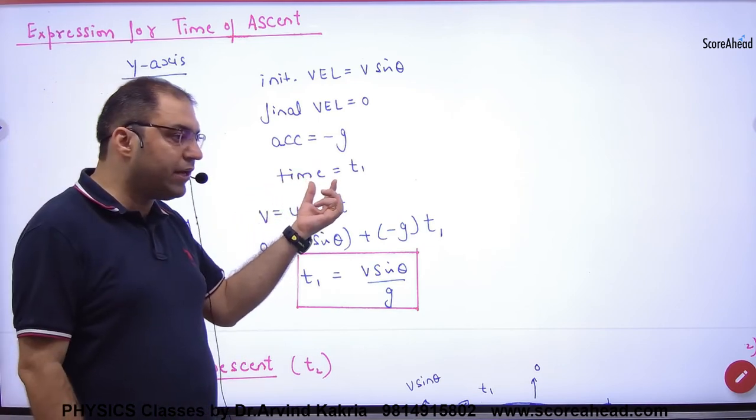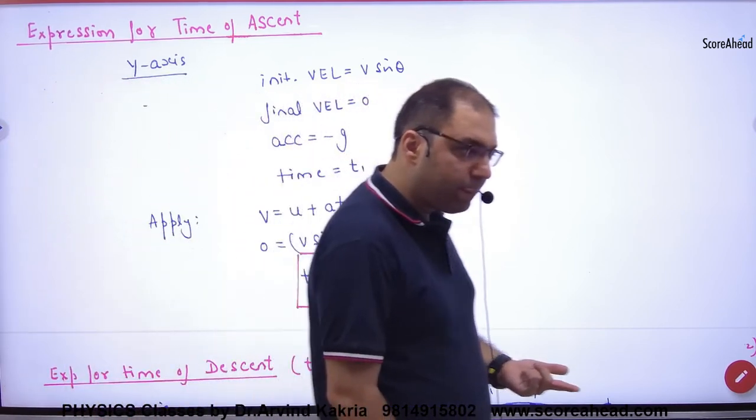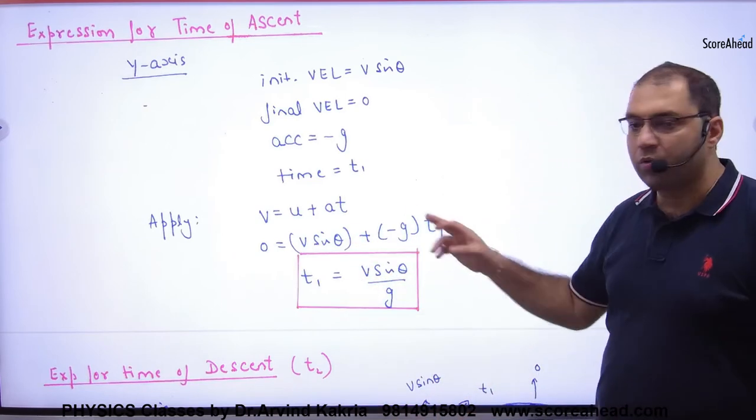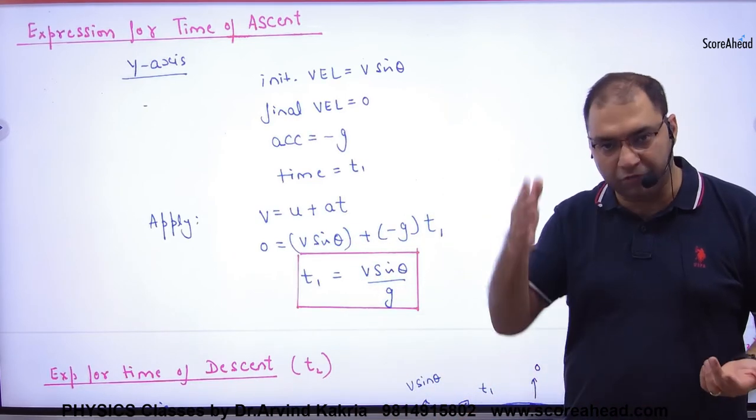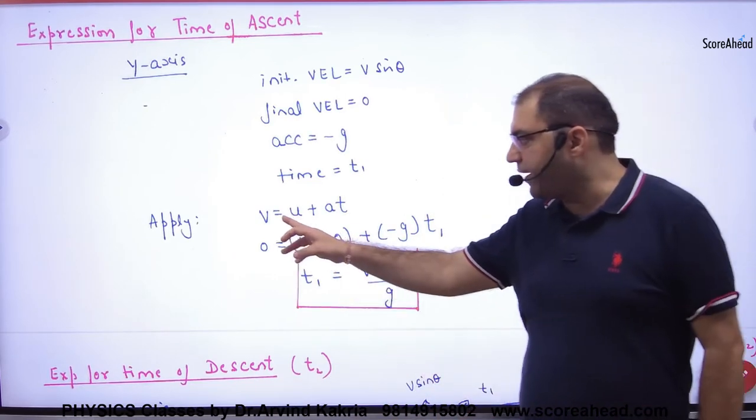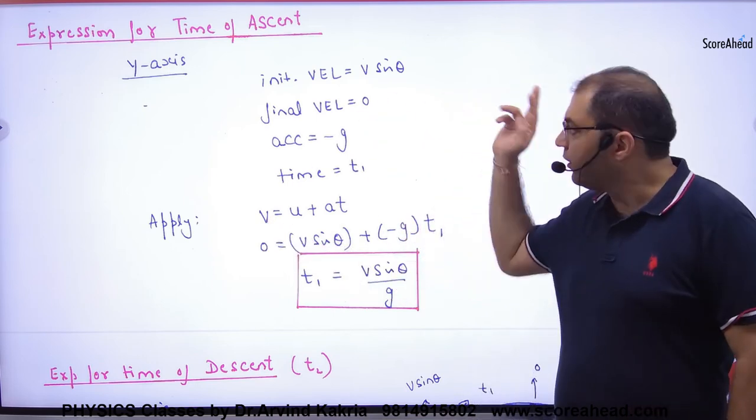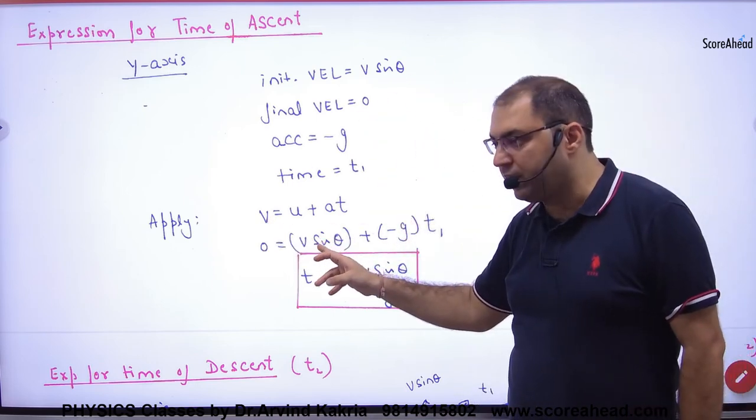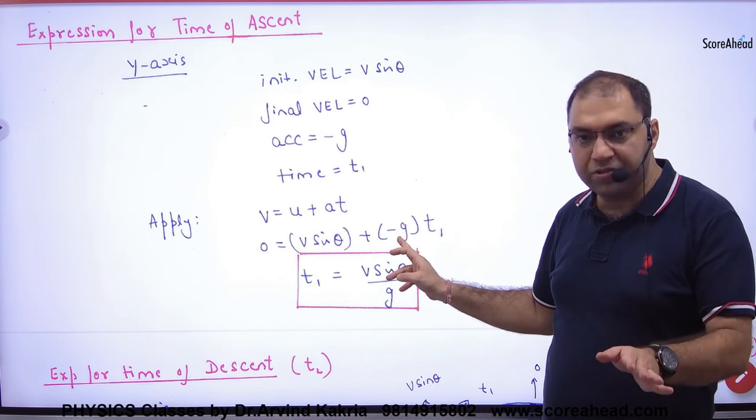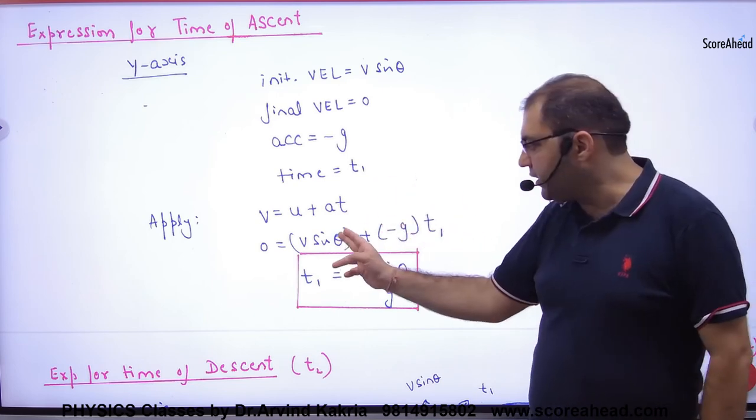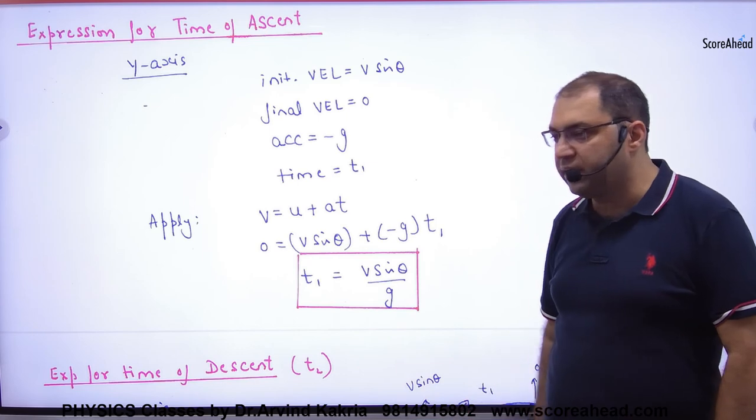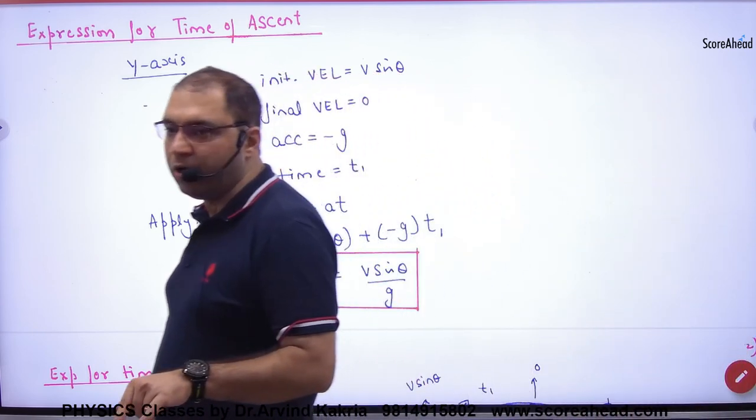So how much time will it take for the body to go up? t1. So you apply v is equal to u plus at. In the y-axis when we apply, final velocity is 0, initial velocity is vsinθ, acceleration is minus g, time is t1. So here we solve, so time of ascent will be vsinθ upon g.